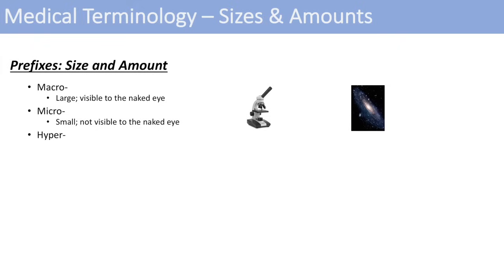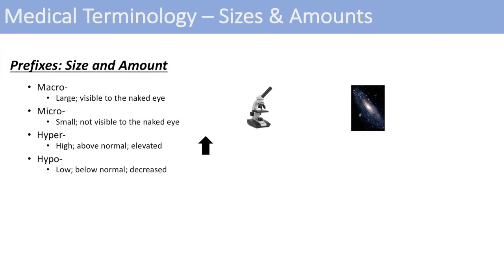Some other prefixes about amount and size: hyper just means high, above normal, or elevated. The opposite of hyper is hypo, which means low, below normal, or decreased. Another prefix you may not be aware of is eu, which just means normal — so the condition is normal. For example, you could be euthermic instead of hypothermic, meaning you're at a normal body temperature.